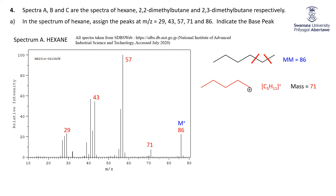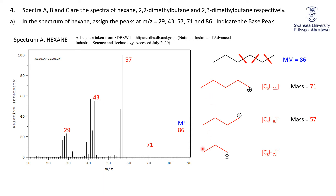Now let's take another peak. Instead of just taking one carbon, we'll take two carbons. So that's C2H5, which is worth 29. Remove that and we get C4H9, which has a mass of 57. Another gap from 57 to 43 is 14 — that's another CH2. And so now we're just splitting it in half. We get C3H7, splitting it right there, and that has a mass of 43.